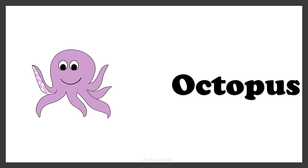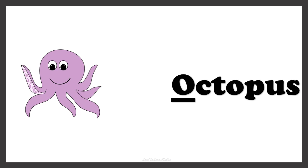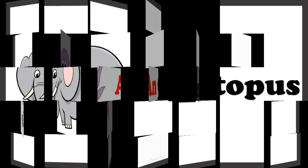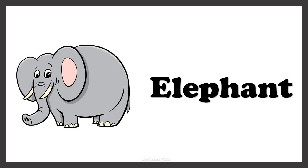Now here we have the image of OCTOPUS. You have to find the article that comes before the word OCTOPUS. The word OCTOPUS starts with the vowel O, so we must use the article AN. Now here we have the picture of ELEPHANT. You have to find the article that comes before the word ELEPHANT. The word ELEPHANT starts with the vowel E, so we must use AN. So we call it AN ELEPHANT.